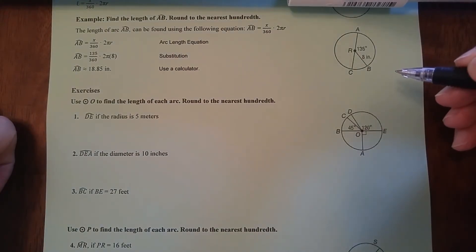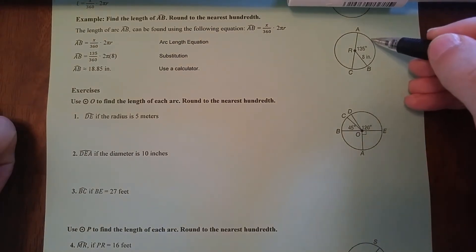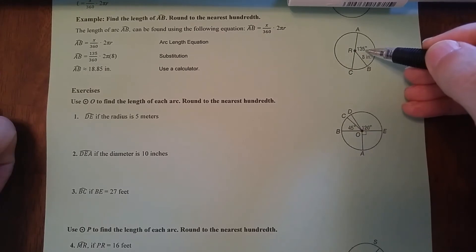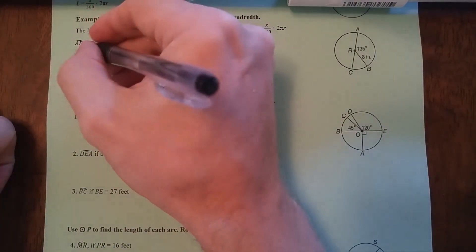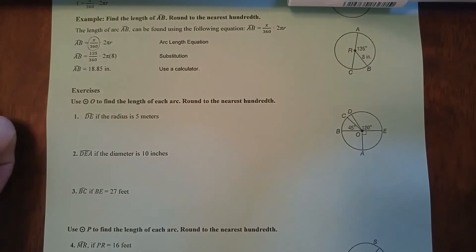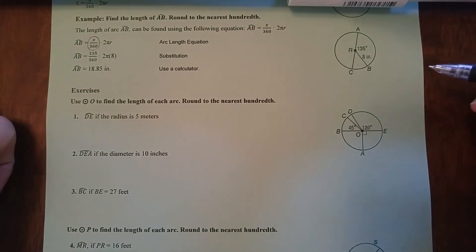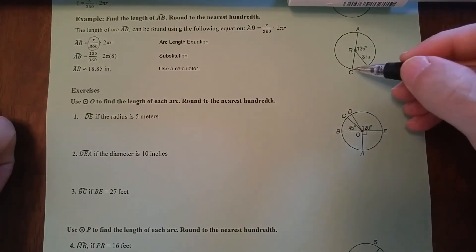So what you're going to do to solve this is you're going to first figure out what percent of the circle this arc is. The way you do that is you take this central angle and you divide it by 360. So this right here tells you what percent of the arc that is.